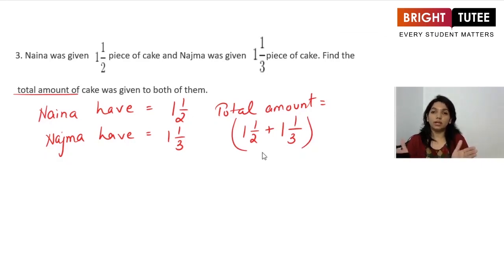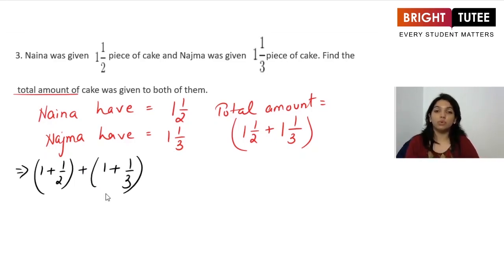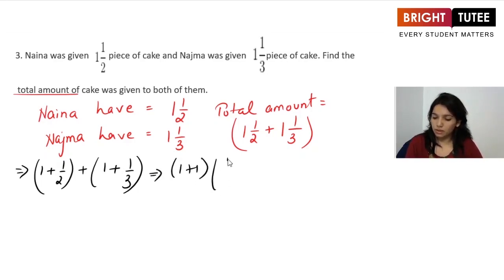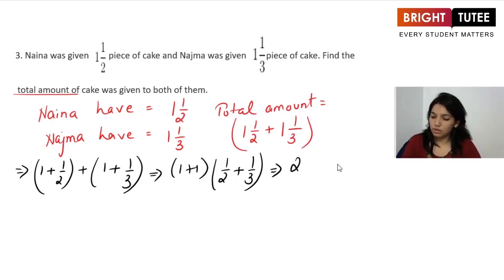We break the mixed fractions up first: it's 1 plus 1/2, plus 1 plus 1/3. The next step is to separate out the whole part together — so we get 1 plus 1, and 1/2 plus 1/3. We separate out the whole numbers and the fractional parts. One plus one is two. These are unlike fractions, so we make them like fractions. The LCM of 2 and 3 is 6.